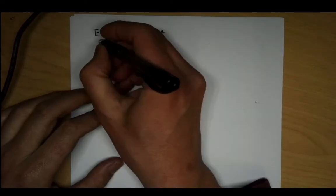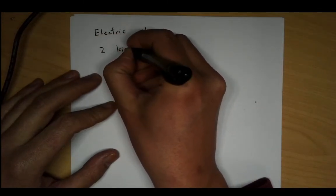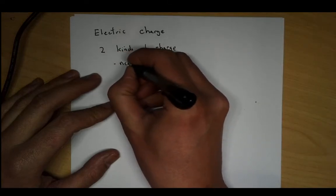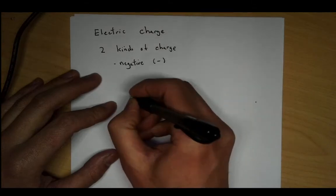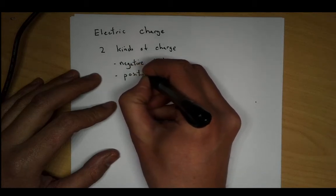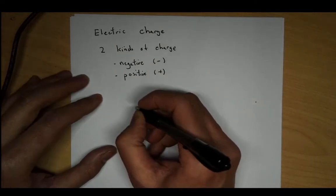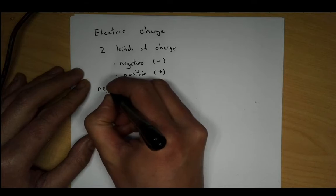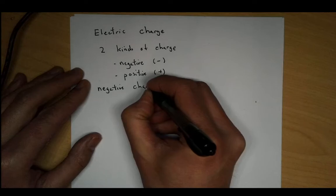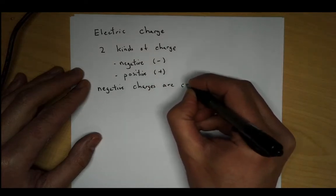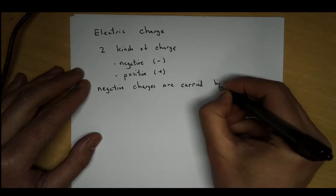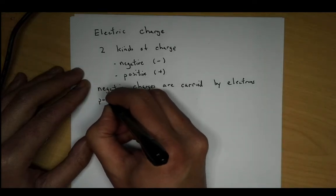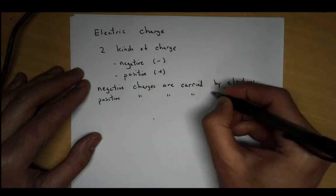For electric charge, there are two kinds of charges. The first is the negative charge, denoted usually by the minus sign. The second is the positive charge, denoted by the plus sign. These charges are carried by particles within the atom. Negative charges are carried by electrons, and positive charges are carried by protons.